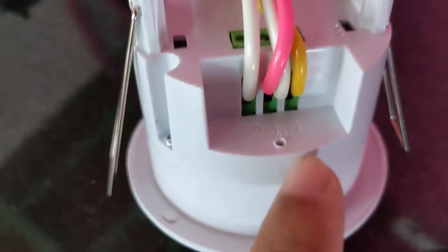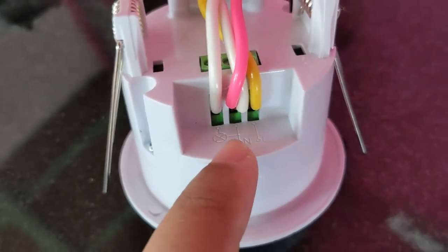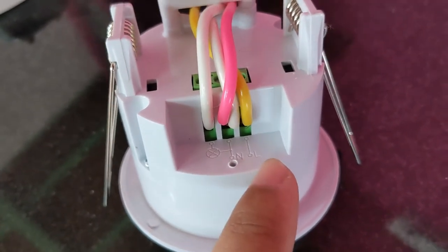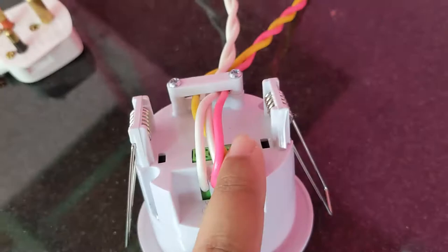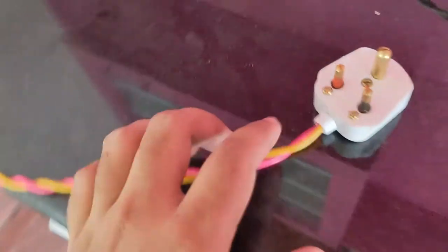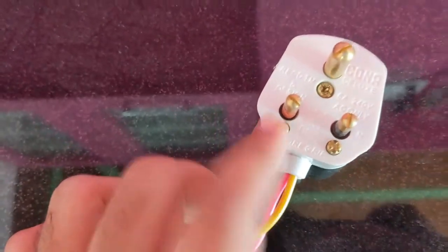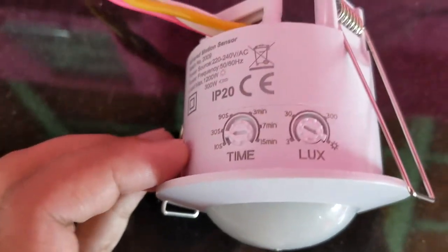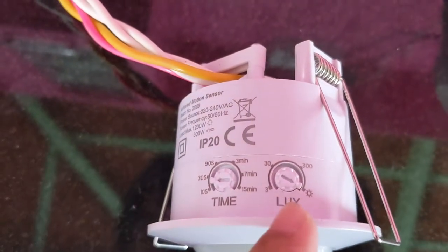So the two wires actually coming from this, as you can see, the load one and the neutral for the power. And the other one is a live wire which I have taken to be this yellow one, and it's coming over here. Also coming to its settings over here, you can actually adjust the time and the intensity at which you want it to switch on.